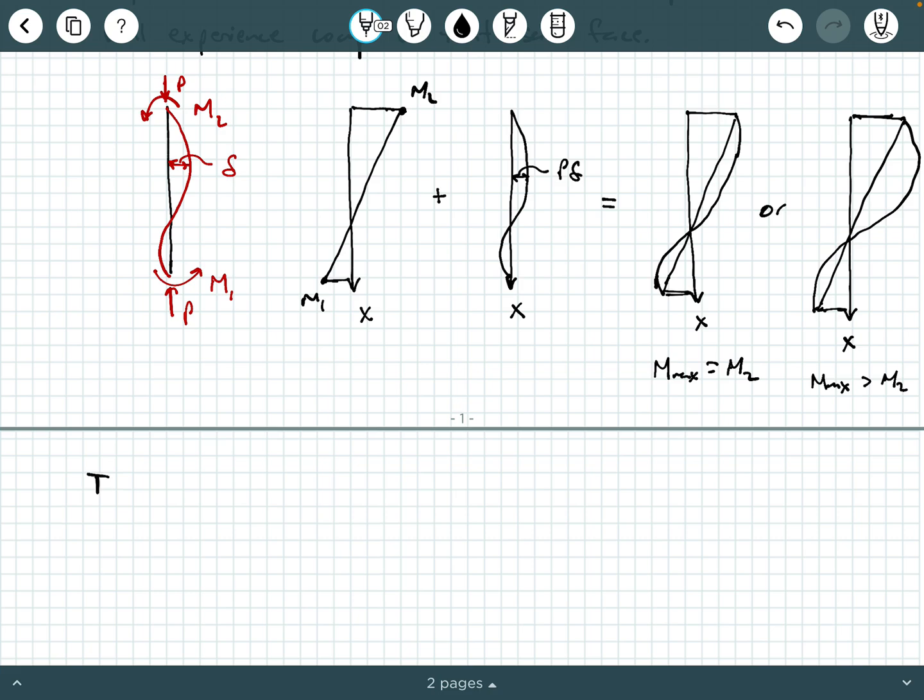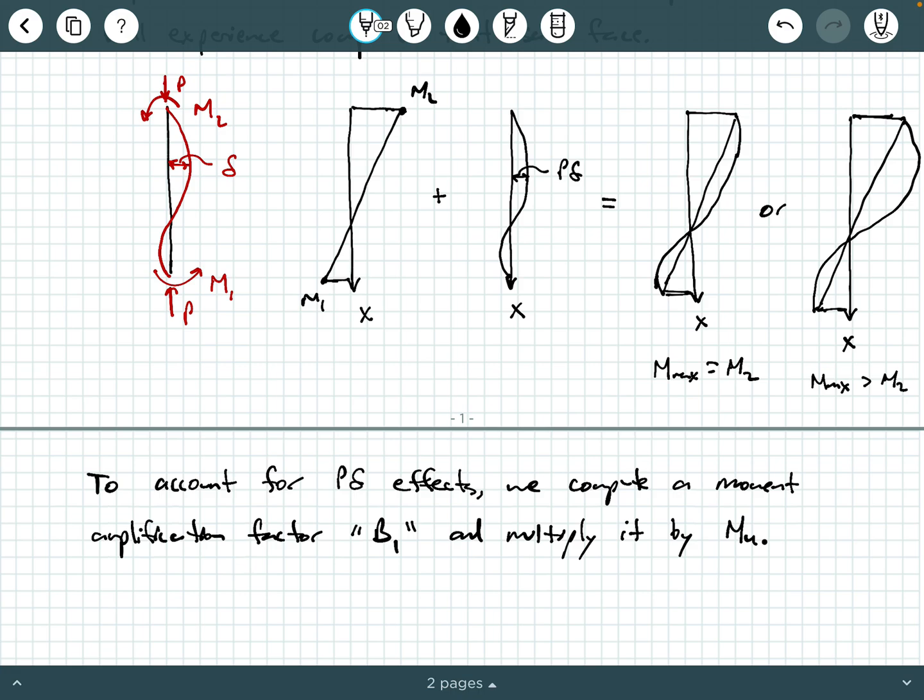Well, what we do is to account for P little delta effects, we compute a moment amplification factor, which a lot of times you see textbooks call that B1 and multiply it by MU. So you multiply it by MU and you use this value, use B1 MU to evaluate the member. To do your design checks for it acting as a beam column.